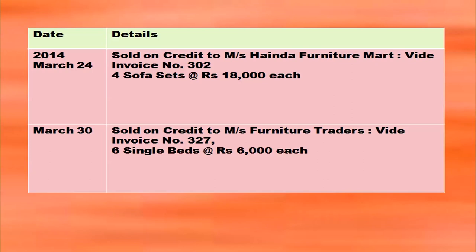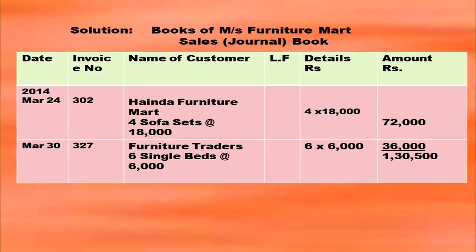Some more transactions for the same question. On March 24, 2014, sold on credit to Messrs Henda Furniture Mart — four sofa sets at Rs. 18,000 each: 4 × 18,000 = 72,000 in the amount column. On March 30, sold on credit to Messrs Furniture Traders — six single beds at Rs. 6,000 each: 6 × 6,000 = 36,000 in the amount column. When all transactions are totaled, it comes to Rs. 1,35,000.